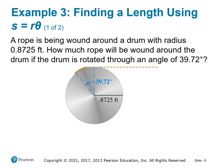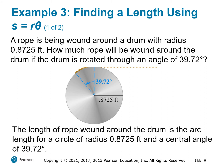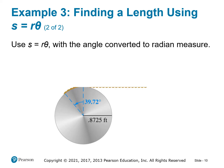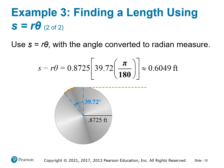We are given the radius and the angle of rotation. Using arc length equals r times theta, with the angle converted to radians by multiplying by π/180, we get an arc length of approximately 0.6 feet.